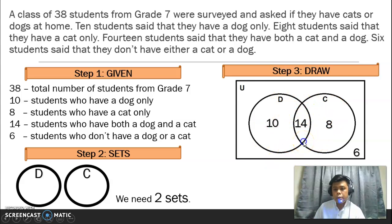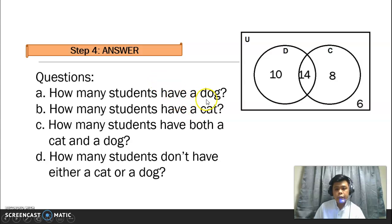Ngayon, sagutin natin yung mga questions. How many students have a dog? Ang sagutin dyan ay 24. So, how come naging 24? Syempre, eto yung dog, yung buong set D. Meron kang 10 at 14. So, 10 plus 14, 24. How many students have a cat? 14 plus 8 naman yan kasi eto yung buong cat. Next, letter C. How many students have both a cat and a dog? 14. Yung parehas merong aso, parehas merong pusa. And then, ilan daw yung how many students don't have either a cat or a dog? Meron tayong anim.